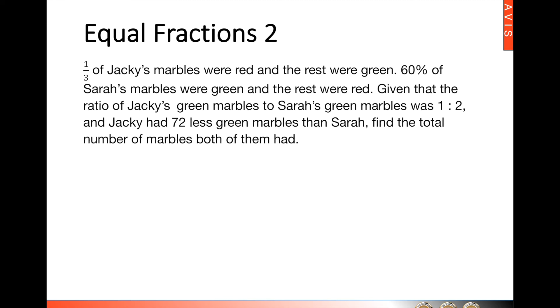One of the key characteristics here is that there will be a total of four given variables and one set of numbers. Here you can see that we have red marbles for Jackie, green marbles for Jackie, red marbles for Sarah, and green marbles for Sarah. So there is a total of four variables and one set of number.